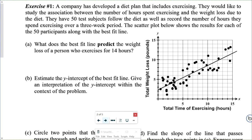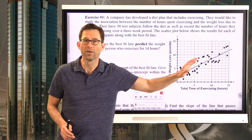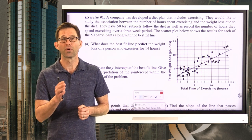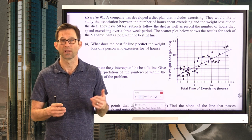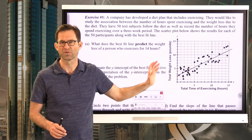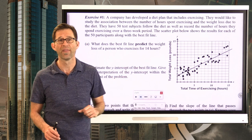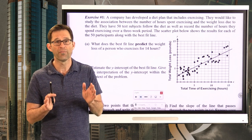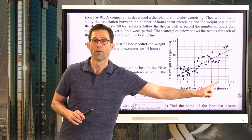Letter A: What does the best fit line predict the weight loss of a person who exercises for 14 hours? The reason people want to do this is to be able to predict the amount of weight a person loses if they follow this diet plan and exercise a particular amount. The question asks how much does the line of best fit — not the data itself — predict a person will lose if they exercise for 14 hours.